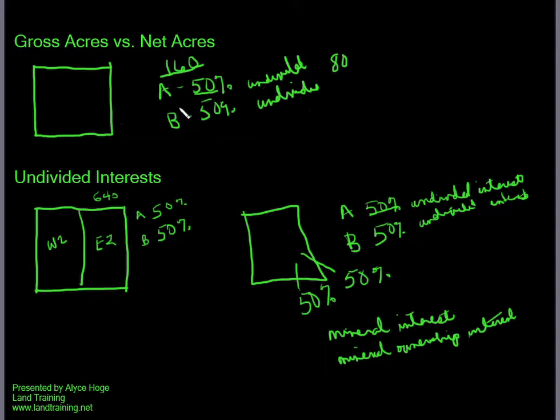In this case, their gross acres are going to be 160 acres—that's what it says in the lease—but their net acres are going to be 80 acres each.